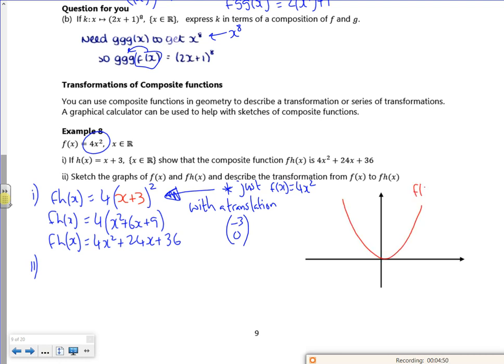So 4x squared would look like that. So that's my f of x, which is that bit there. Then I'm doing 3 to the right, to the left sorry. So now I've got that. So that's going to be my f of h of x. So it's gone from 0 to minus 3. Well that's not overly bad is it really? I've got to describe the transformation. So it's just a translation minus 3, 0.